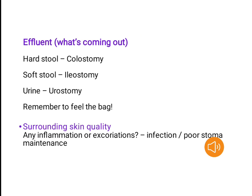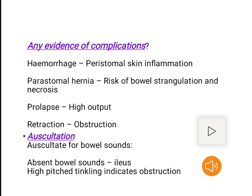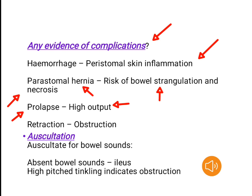Remember to feel the bag. Assess surrounding skin quality — look for any inflammation or excoriations, which may indicate infection or poor stoma maintenance. Look for any evidence of complications: hemorrhage, peristomal skin inflammation, peristomal hernia with risk of bowel strangulation and necrosis, prolapse which can occur due to high output, and retraction which means there is obstruction.